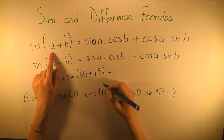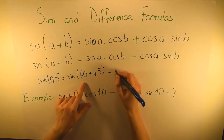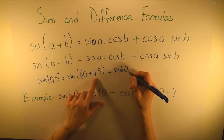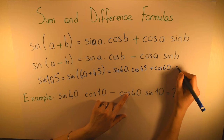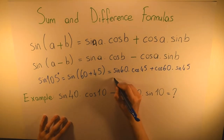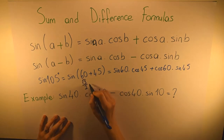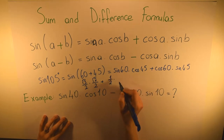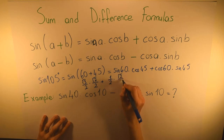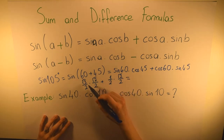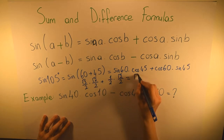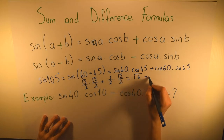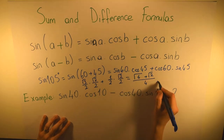Applying the formula: sine(60+45) = sine 60 · cosine 45 + cosine 60 · sine 45. Sine 60 is √3/2, cosine 45 is √2/2, cosine 60 is 1/2, and sine 45 is √2/2. Since they share the same denominator, this simplifies to (√6 + √2) / 4, which is our answer.